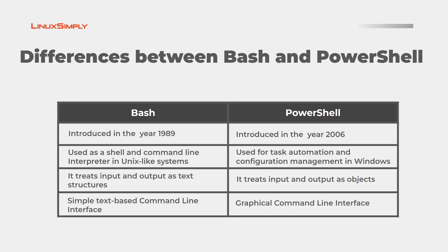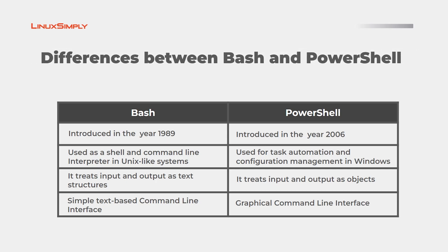Now, I will be talking about the differences between Bash and PowerShell. PowerShell was introduced in the year 2006, whereas Bash was introduced way earlier in the year 1989. Bash is used as a shell and command line interpreter in Unix-like systems such as Linux, whereas PowerShell is used for task automation and configuration management in Windows. Bash treats inputs and outputs as strings or text structures, whereas PowerShell treats them as objects. Also, Bash has a simple text-based command line interface, whereas PowerShell has a more graphical command line interface.